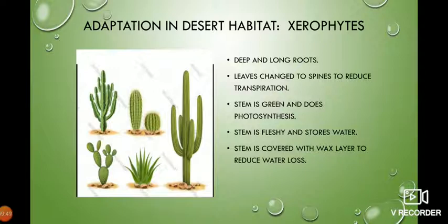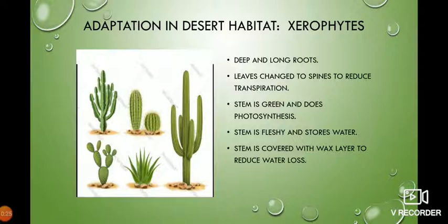Let us take the first habitat: the desert. The desert has very little water — almost none — with a lot of hot sand, and it is very hot. At the same time, the nights are very cold. What type of plants live in deserts? Yes, we do find plants, and we call them xerophytes, or more commonly, cactus plants. The first adaptation is that they have very long and deep roots, because they have to search for water which is not easily available in the desert. If you have a small plant, the root may be several times longer than the plant itself.